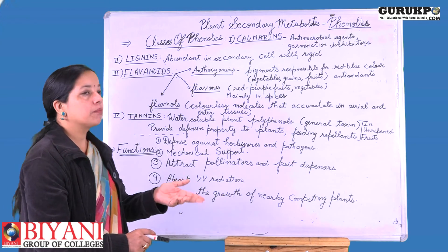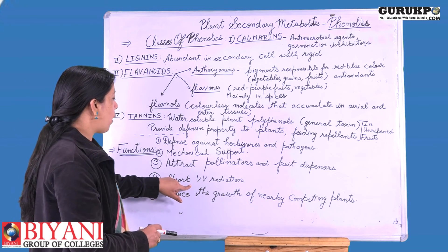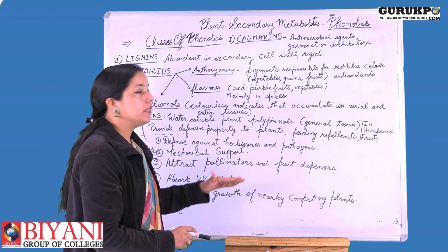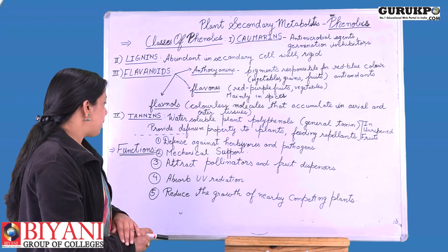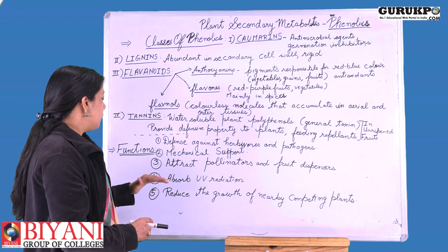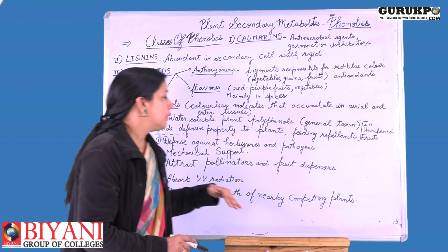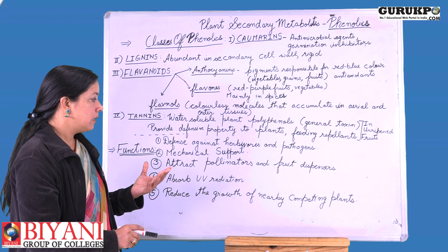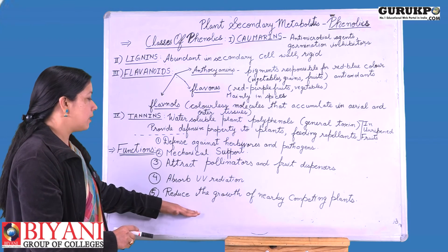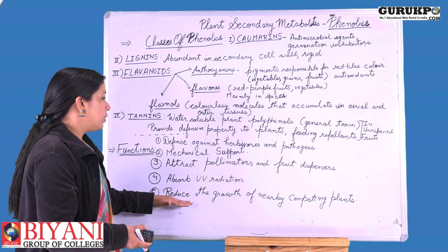Another function of phenolics is to provide protection to the plant against harmful UV radiation. It has been shown that they absorb in the UV region of the electromagnetic spectrum. Phenolics also reduce the growth of nearby competing plants by secreting toxins that are harmful to those plants, thereby supporting the growth and survival of the host plant.